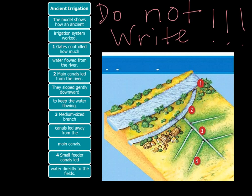If you look at number one, there are gates that control how much water flowed from the river — those are the dikes. The main canal is led from the river, and there's a slope there so that the water can flow through it.